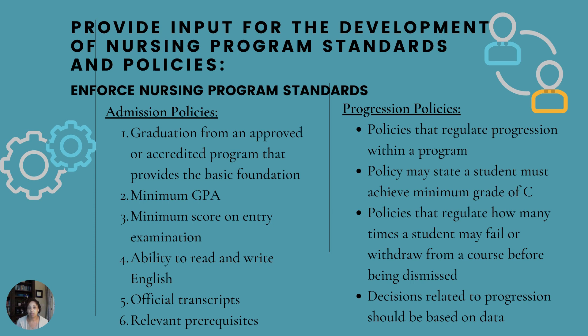Second is the minimum GPA. Third is a minimum score on an entry exam. Fourth is the ability to read and write English, and whether or not a TOEFL exam is required to validate that knowledge. Fifth is going to include those official transcripts. And finally, those relevant prerequisites.